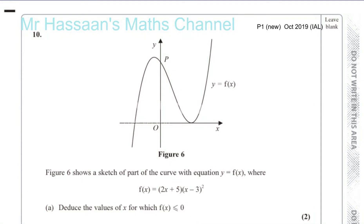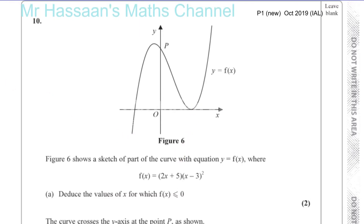Question number 10 from the October 2019 International A-Level paper. Here we have a sketch of a part of a curve with equation y equals f of x, where f of x equals 2x plus 5 times x minus 3 squared, and we've got to deduce the values of x for which f of x is less than or equal to 0.